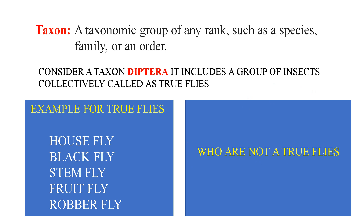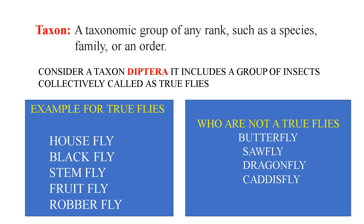These are called true flies. Then who are not true flies? Butterfly — the butterfly belongs to the order Lepidoptera, so it is not considered a true fly. While writing these names, you must not provide a gap between the two words; it must be written as a single word. Other such examples are: sawfly, which belongs to the order Hymenoptera; dragonfly, which belongs to the order Odonata; and caddisfly, which belongs to the order Trichoptera.